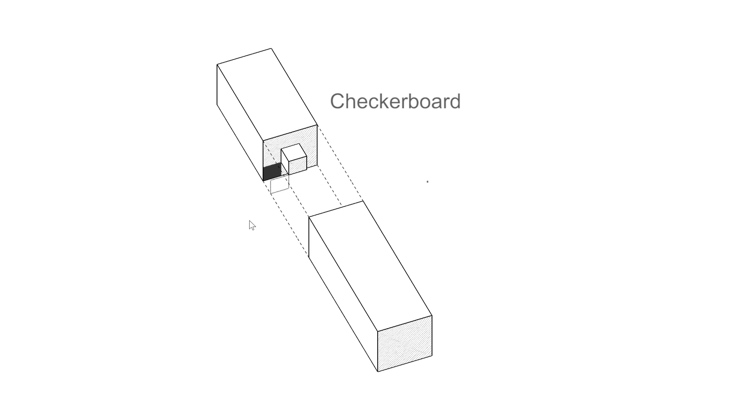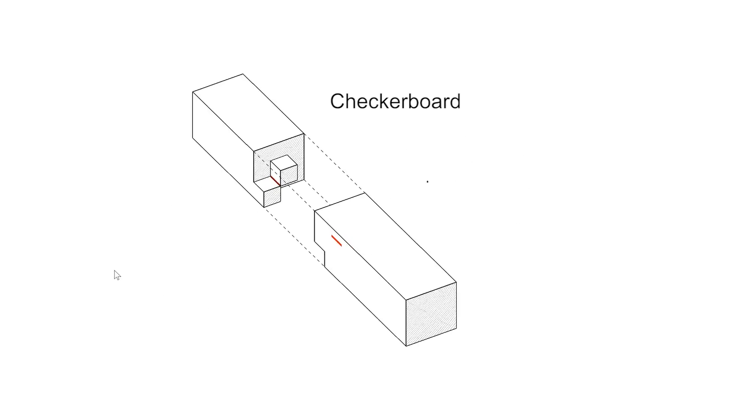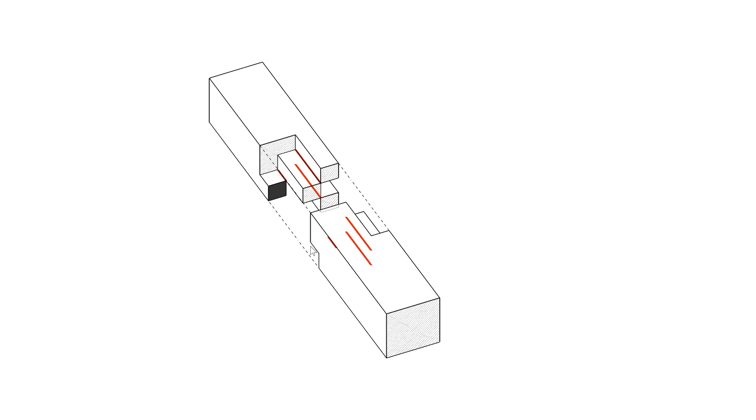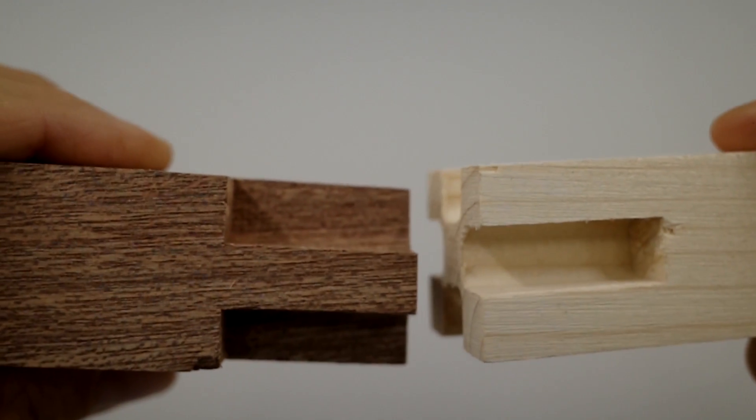The system also detects so-called checkerboard patterns, which are indicated by a thick red vertical line. This pattern is problematic to fabricate and to assemble.